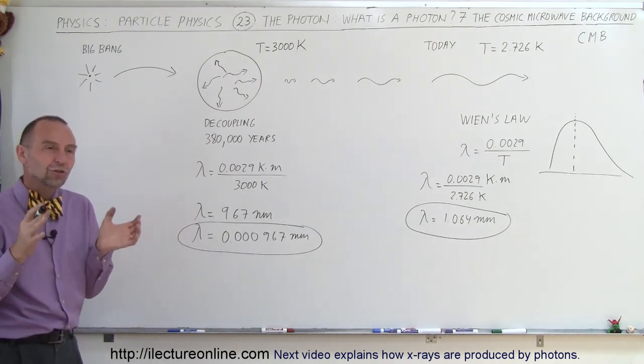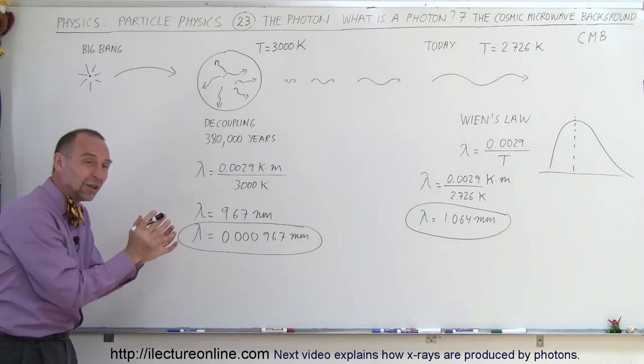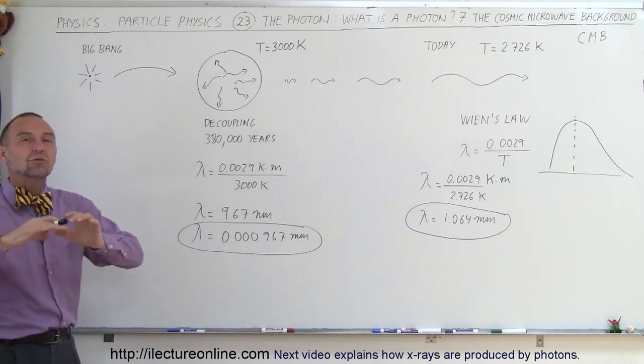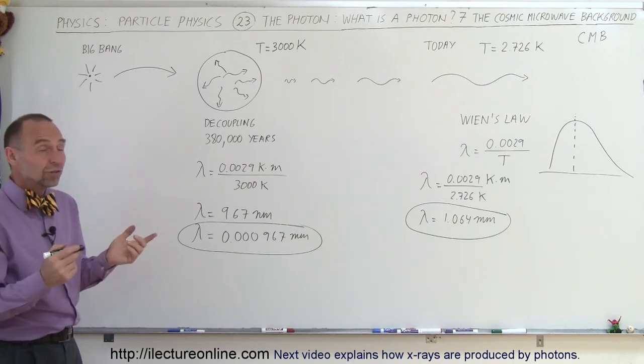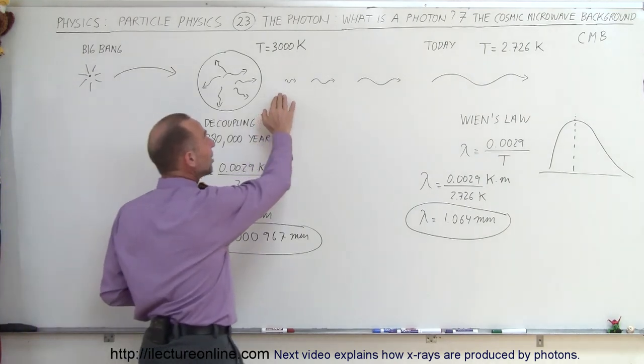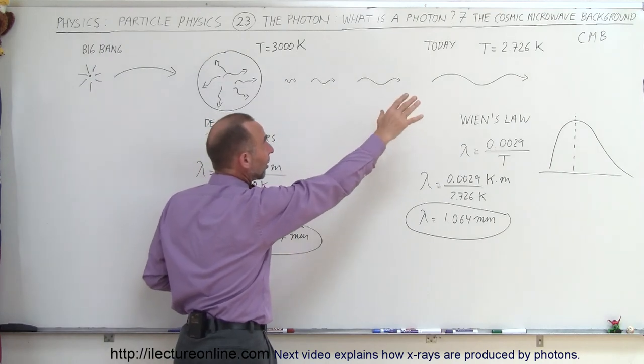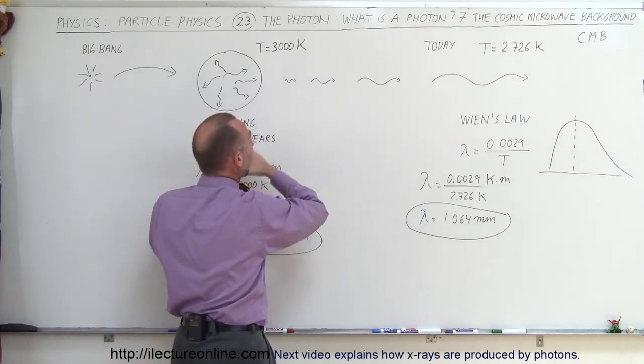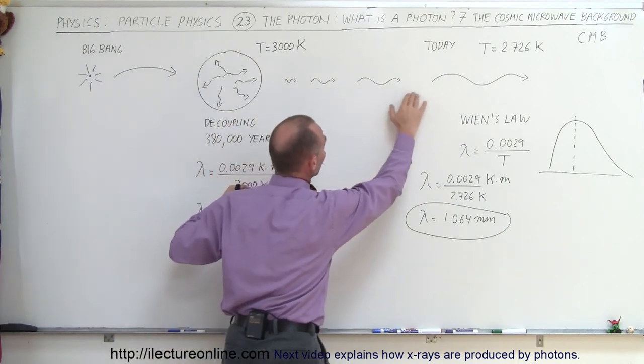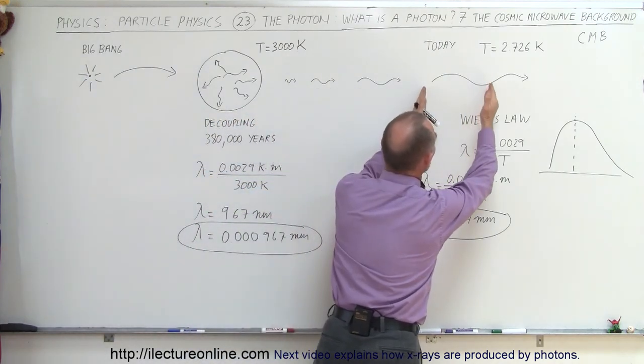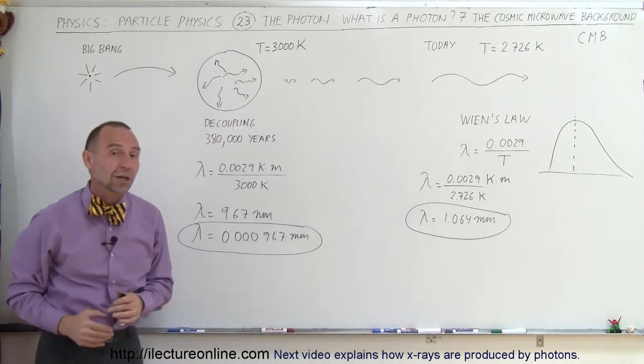Imagine, the universe has grown from what it was then to what it is today, and today it is more than a billion times the volume that it was back then. And the result of that is, as the radiation called the cosmic background, or the cosmic microwave background, as the universe has been stretching, the waves have been stretching, stretching, stretching, where today the wavelength is about one millimeter, where back then it was about one micrometer.